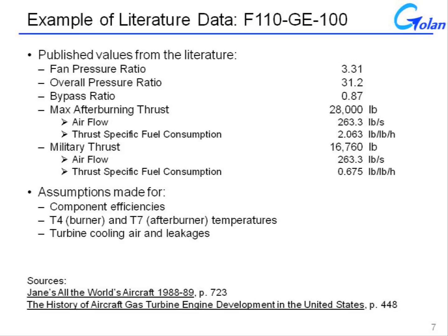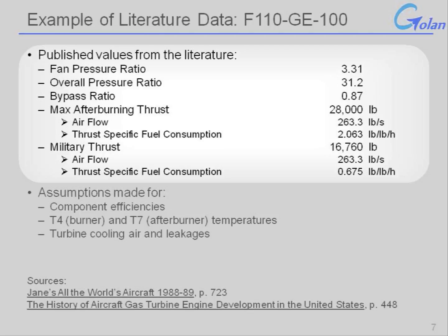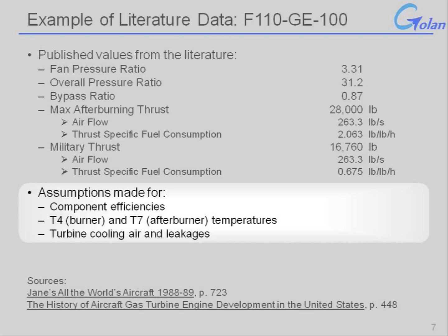Let's look at another example. Here is the published information for the GE F-110 engine, the dash-100 version. Again, openly published: fan pressure ratios, overall pressure ratio, bypass ratio, max thrust, military thrust, TSFC at both max and military conditions, as well as air flow. We'll still need to make some assumptions for component efficiencies. In this case we don't have a published value for the burner T4, but since it's contemporaneous with the F-100 engine, it's got to be in the same ballpark. You'll also need to make assumptions for T7 — the afterburner temperature — and for cooling air and leakages.